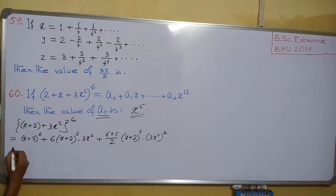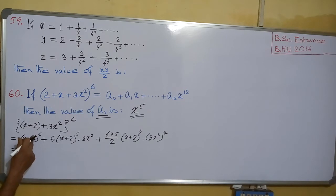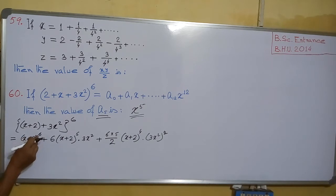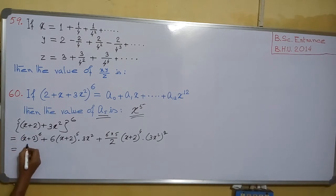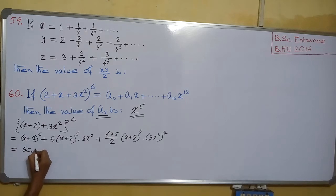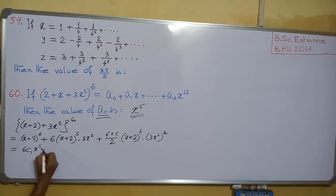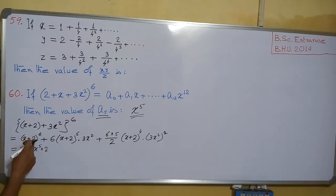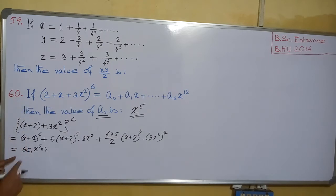So expanding, we require only x⁵. The x⁵ term in the first group will come from (x + 2)⁶ — specifically the term 6C1·x⁵·2, which is the second term in the expansion. So in this second term, what is the coefficient?